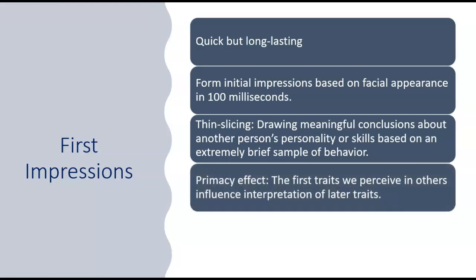One of the challenges we face is that the first inferences we make about traits that people have tends to be the one that sticks. We call that broadly a kind of primacy effect. So whatever traits we kind of pull in and assume that another person has tend to influence the way we make sense of the person's later appearance or their later behavior.